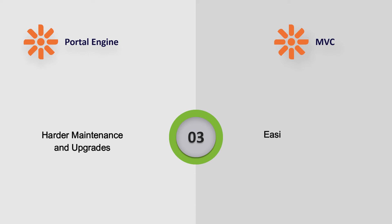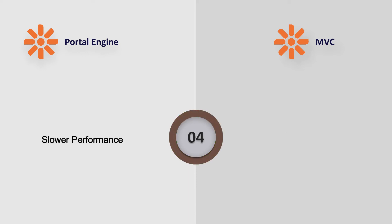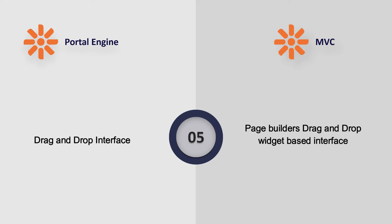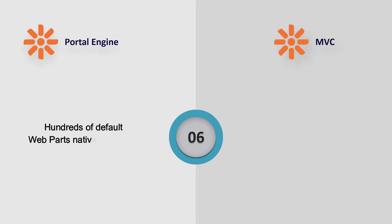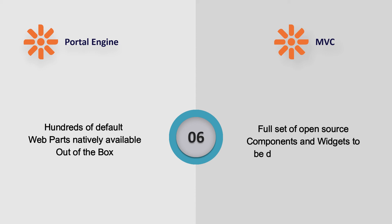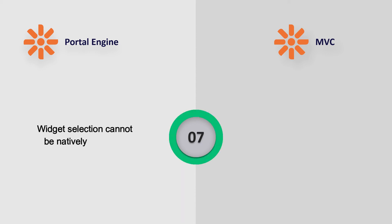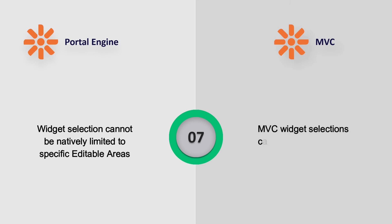Portal Engine presents harder maintenance and upgrades, slower performance, and a drag-and-drop interface page builder with hundreds of default web parts natively available out of the box. MVC offers easier maintenance and upgrades, faster performance, and a drag-and-drop widget-based interface with superior UX. A full set of open-source components and widgets was set to be delivered in 2019. Widget selection cannot be natively limited to specific editable areas in Portal Engine, whereas MVC widget selections can be easily limited to specific editable areas.